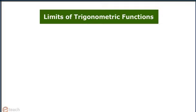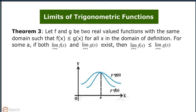Limits of trigonometric functions. Theorem 3: Let f and g be two real valued functions with the same domain such that f(x) is less than equal to g(x) for all x in the domain of definition. Then for some a, if both the limit exist, then limit x tends to a f(x) is less than equal to limit x tends to a g(x).